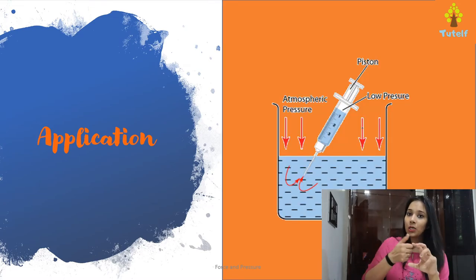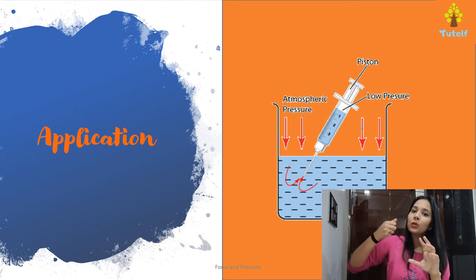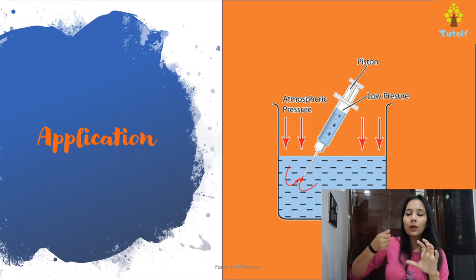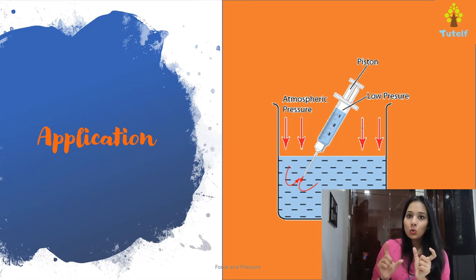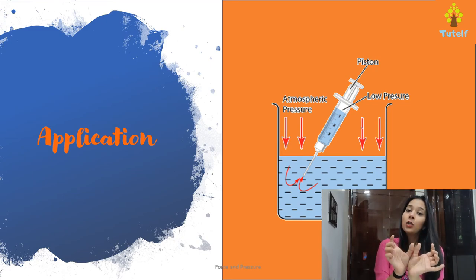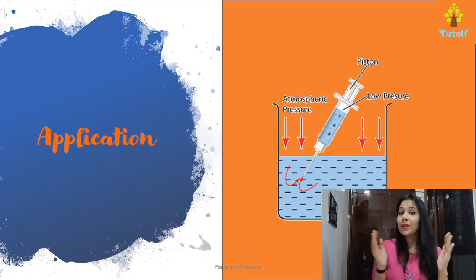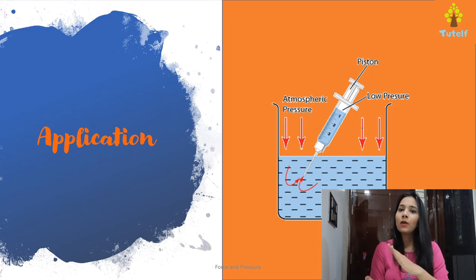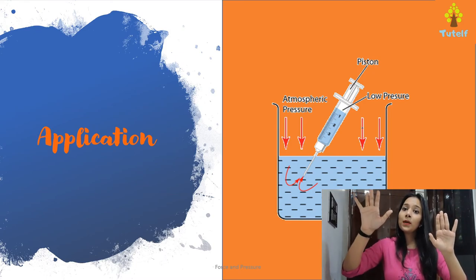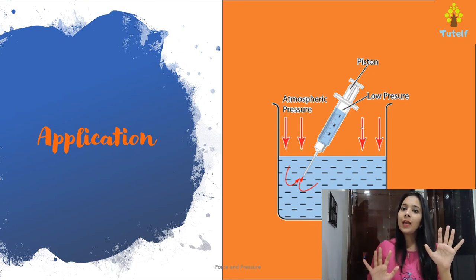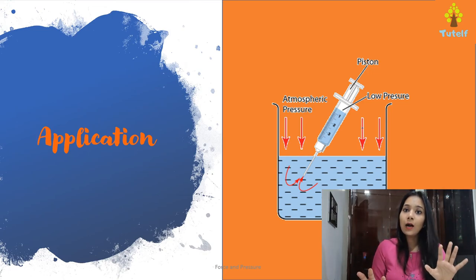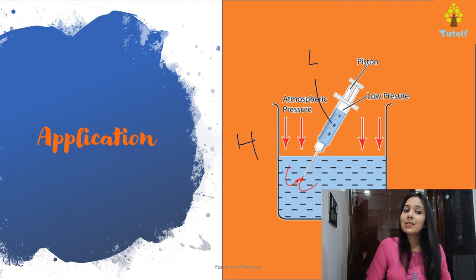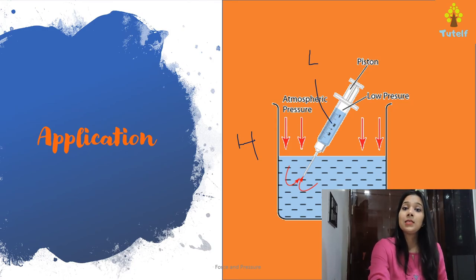The next one is the syringe. When you pull the piston back, the water is sucked in. Why? Because when you pull the piston, the particles inside are spread over a larger area. Since pressure equals force upon area, as the area increases, the pressure decreases. So as the piston is pulled back, inside becomes low pressure, and the outside is high pressure — so the water is pulled up into the syringe. That is also how blood is drawn from your veins — the same way.